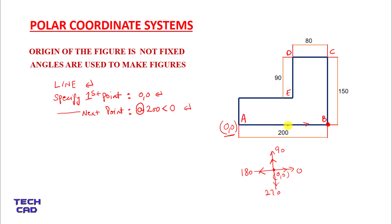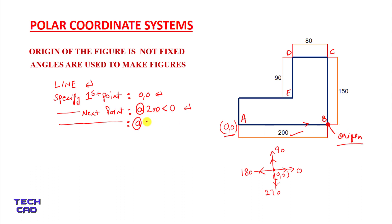Once you enter, this 200-unit line will be made. Then again AutoCAD will ask you to specify the next point. Again you have to put the at-sign. When you put the at-sign, B becomes the origin for your BC line. Now for BC line, put the at-sign to make B your origin. The length of line is 150, then less-than sign. The angle — it moves upwards, so this angle is 90 degrees. Again enter.